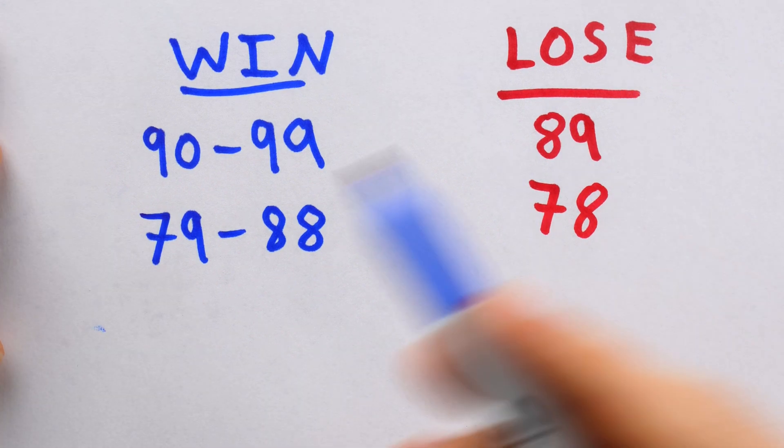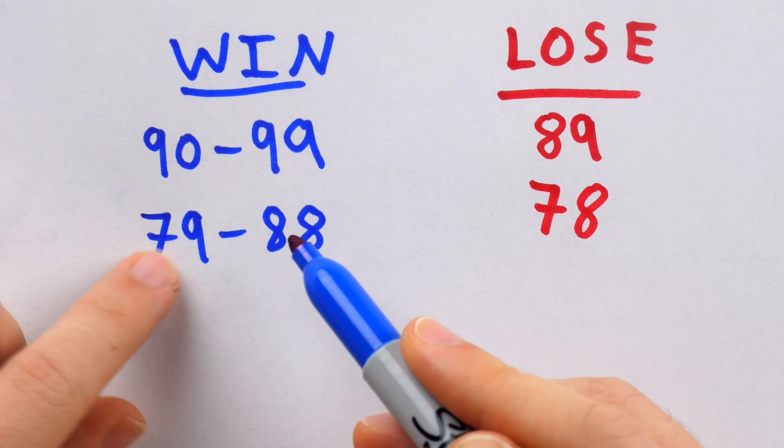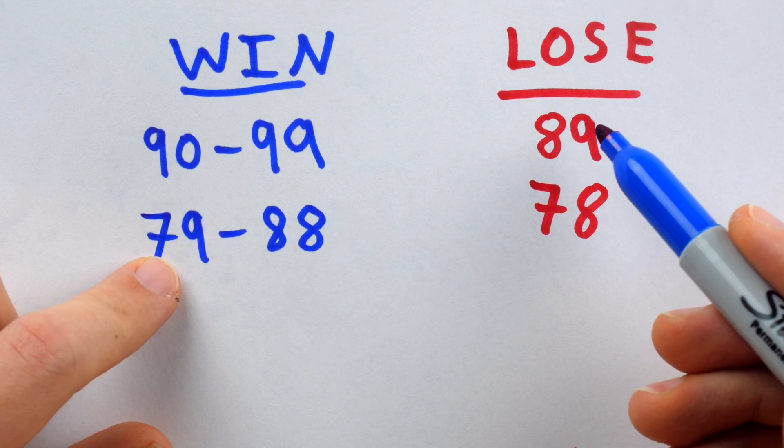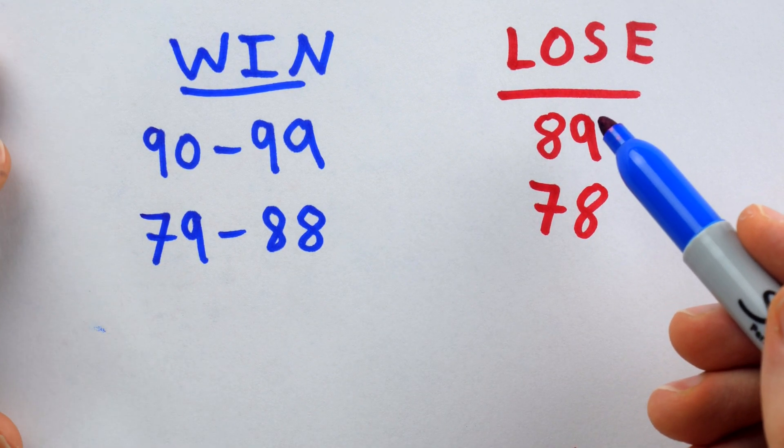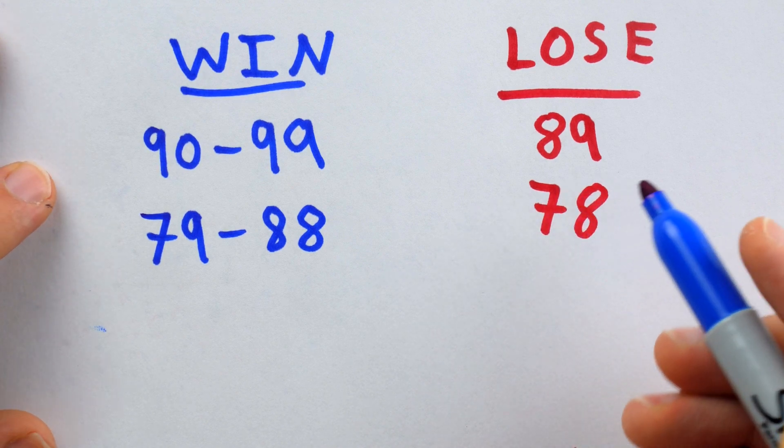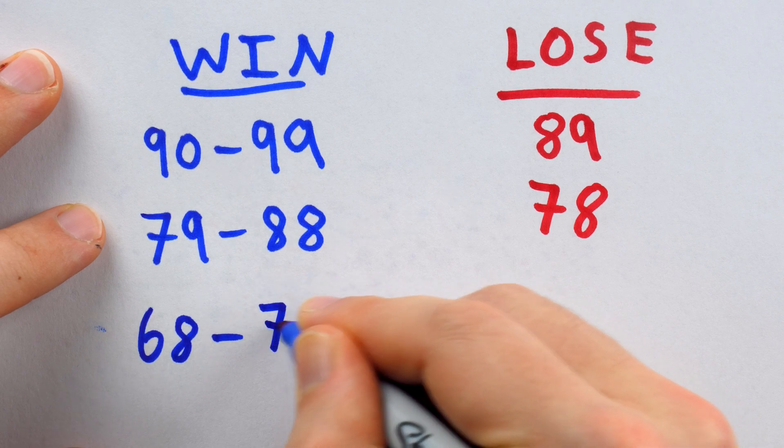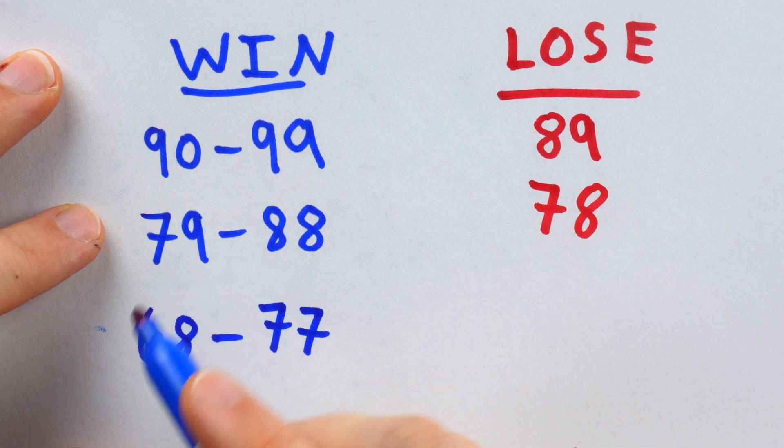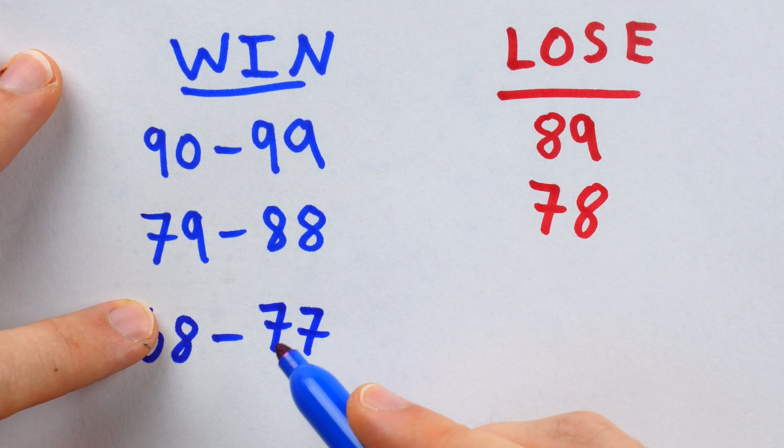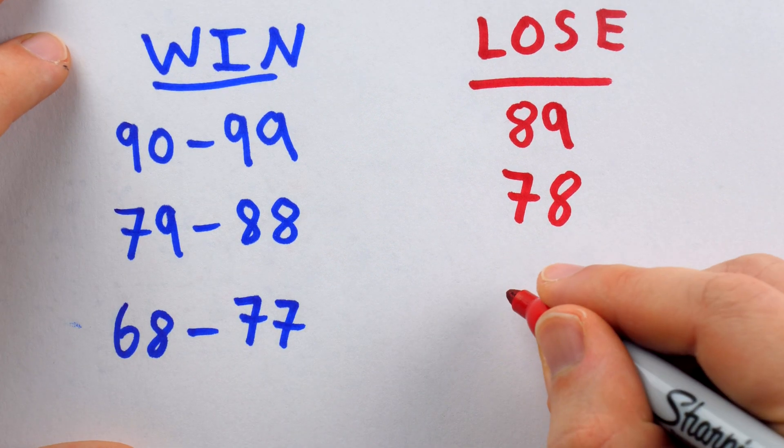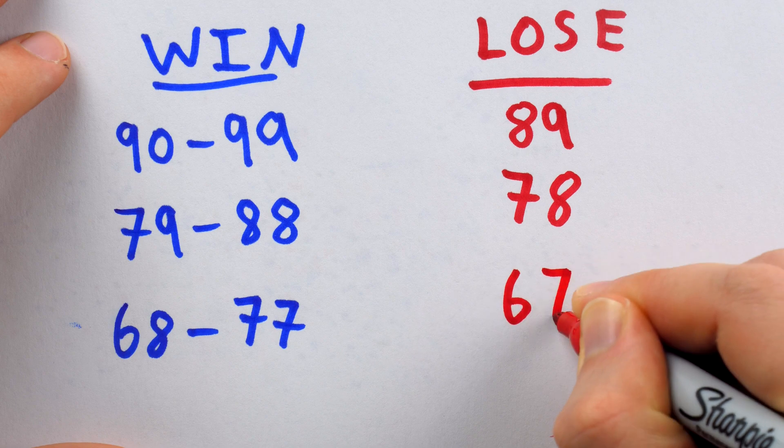And this pattern continues. We know that these are winning positions because from them, you can move to 89, where the other player is stuck in a losing position. And similarly, since 78 is a losing position, we know that everything from 68 to 77 is a winning position, because from these positions, you can force the other player to be in this losing position. Continuing the pattern, the next losing position is 67.